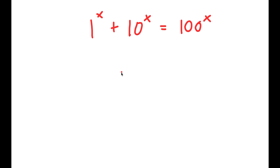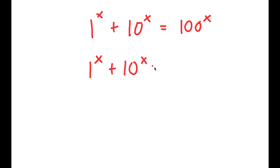To solve this, I'm going to first start by rewriting this as 1 to the power of x plus 10 to the power of x is equal to 10 squared to the power of x.